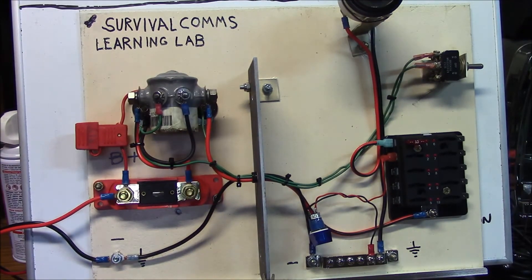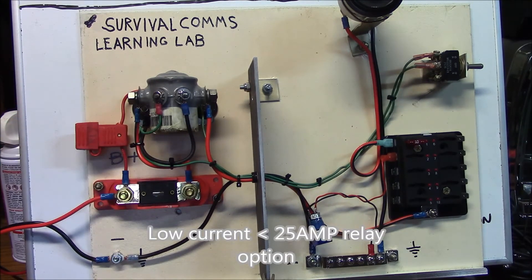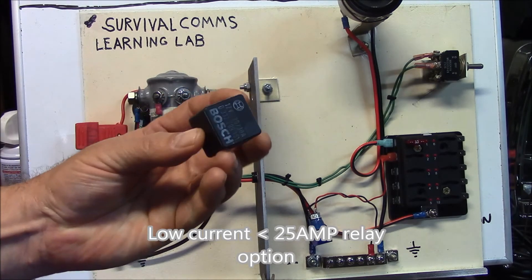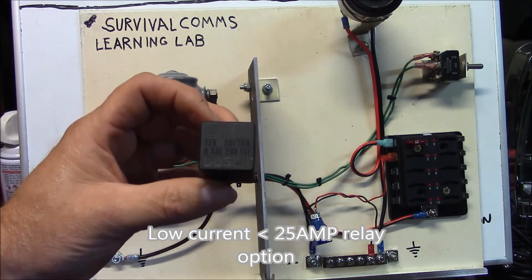If you are desiring to use a much smaller circuit, like let's say that you only had to power a single mobile radio, one of these right here will suffice for that. This is just a 30 amp relay.